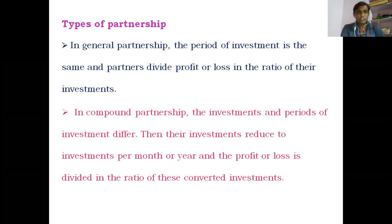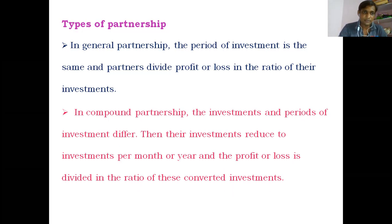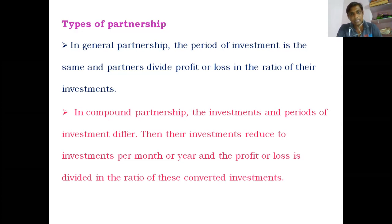The second type is compound partnership, where the investment periods are different. For example, X invested 10,000 rupees and Y also invested 10,000 rupees. But after three months, X invested 10,000 more. So after three months, X's total amount becomes 20,000 and Y remains at 10,000. These investments are called compound investments, or a partner may also withdraw a certain amount.